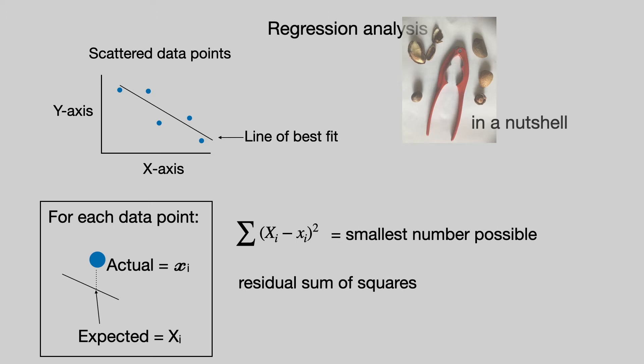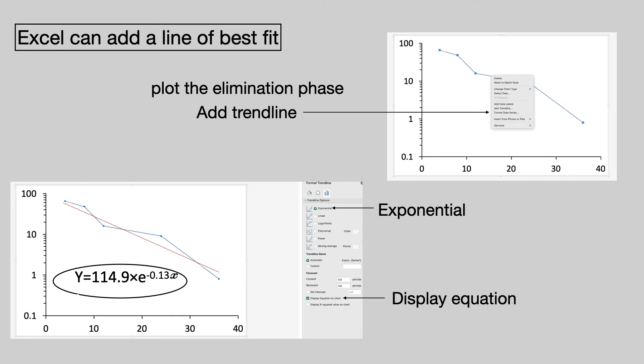Fortunately, we do not have to do a lot of calculation and mathematics to add a line of best fit, because spreadsheet programs such as Excel will do it for you. You would plot the elimination phase on a semi-log plot in Excel, and then use the menu to add a trend line. That trend line is shown here in the red line. Because it's a semi-log plot, choose the exponential option and also display the equation.